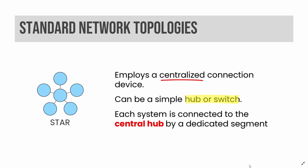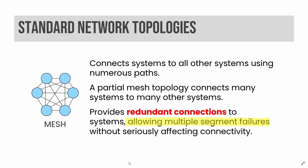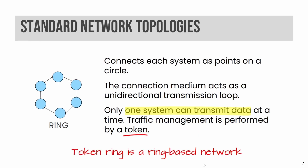A star network topology employs a centralized connection device — it can simply be a hub or switch. Each system is connected to the central hub by a dedicated segment. A mesh network topology connects systems to all other systems using numerous paths. A partial mesh topology connects many systems to many other systems. A mesh network topology provides redundant connections, allowing multiple segment failures without seriously affecting connectivity.